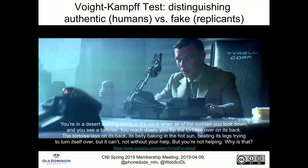The movie begins with the Voight-Kampff test — the idea that we can tell a replicant from a human by asking a series of questions, because otherwise they're indistinguishable. We ask them questions, and based on their empathetic response — particularly empathy towards animals — we can tell whether or not they're real. The first interrogator is essentially a red shirt; he dies almost immediately because the replicant he's interrogating realizes he's failing the test and kills him.